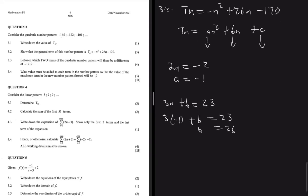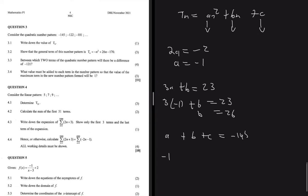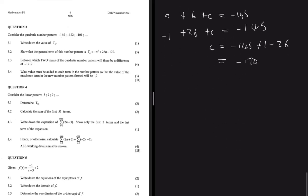For c, we have a plus b plus c, which is always equal to the first term — in this instance, minus 145. A is minus 1, b is 26, so we're solving for c. We get c equals minus 145 plus 1 minus 26, which gives us minus 170. So we have proved that Tn equals minus n squared plus 26n minus 170.